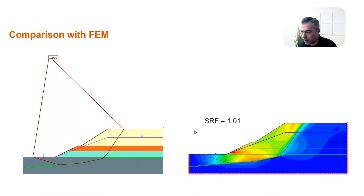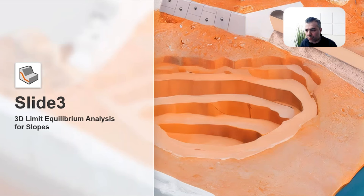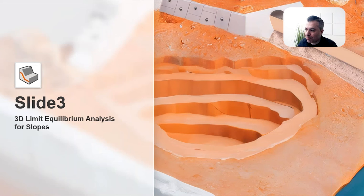For this model I also ran the finite element analysis, which we always recommend alongside limit equilibrium to confirm results. You can see the red critical slip surface from Slide matches the results from RS2 software, and the factor of safety is 1.01 — very close failure surfaces and very close values of factor of safety. Finite element confirms the results. Let's move on to the 3D analysis in Slide3 software.